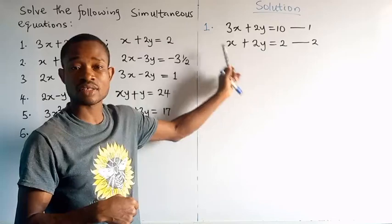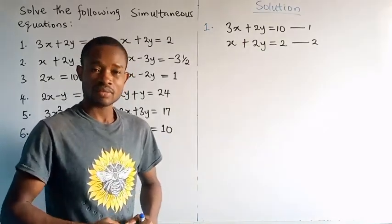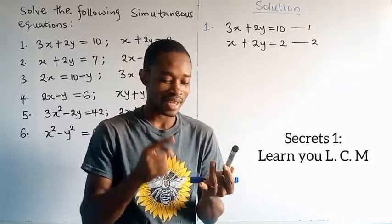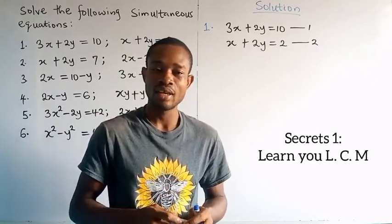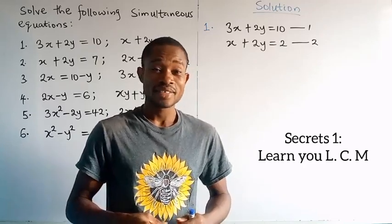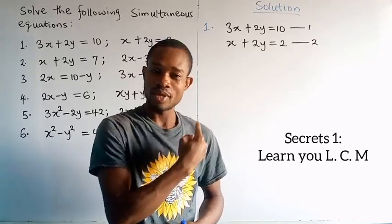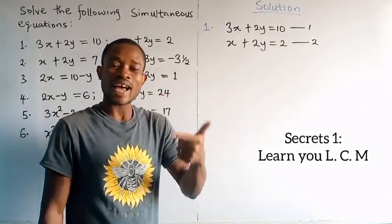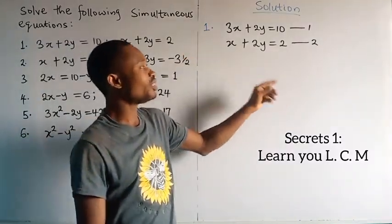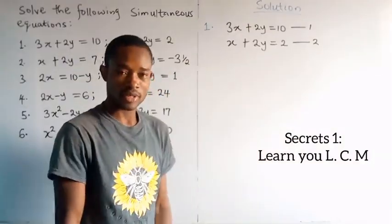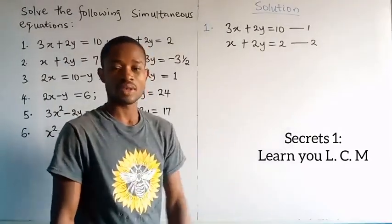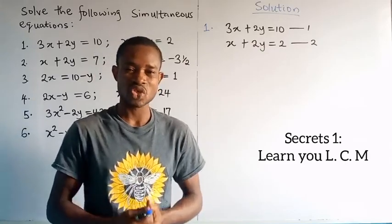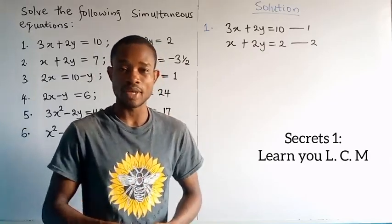I am going to tell you the background knowledge — the secrets — you need in order to eliminate a particular variable. Our unknown variables are x and y. The first secret: you need the concept of LCM (Lowest Common Multiple), which we learn from about primary 3 or 4. If you decide to eliminate a variable, its coefficient in both equations must be the same. If they are already the same, you can proceed straight to eliminate.